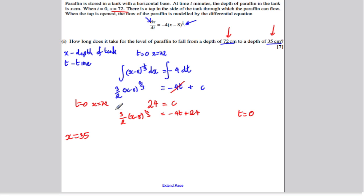If we do that, 35 minus 8 is 27. 27 to the 2 thirds is 9. And times up by 3 over 2, you get 27 over 2. So this side, you get 13.5 is equal to minus 4t plus 24. Rearranging, minus 4t would be 13.5 take away 24, which is minus 10.5. And dividing by minus 4, you would get t is equal to 21 over 8. So t is equal to 21 over 8 seconds. And that's 2.625 seconds.